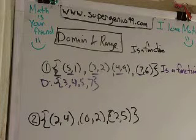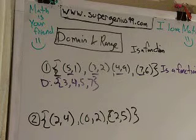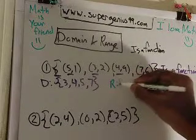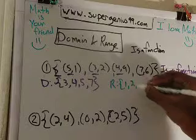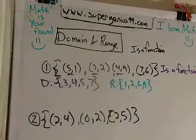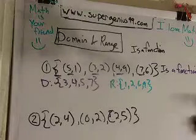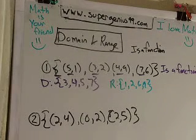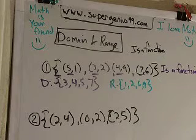And then your range is your y values. Try to copy those down from least to greatest. So those are 1, 2, 6, and 9. I try to put them in numerical order. So that's how you figure out your domain and range for a set.